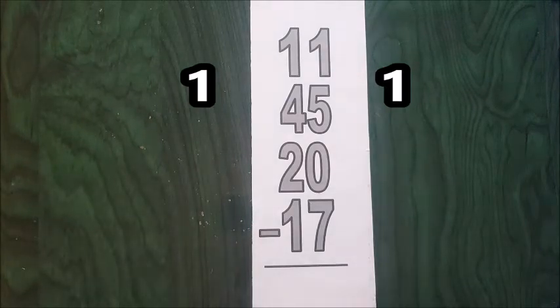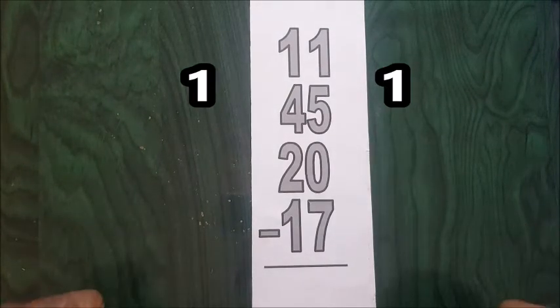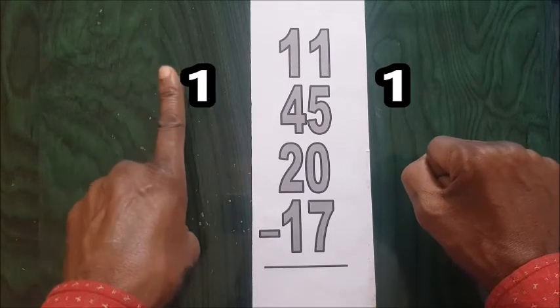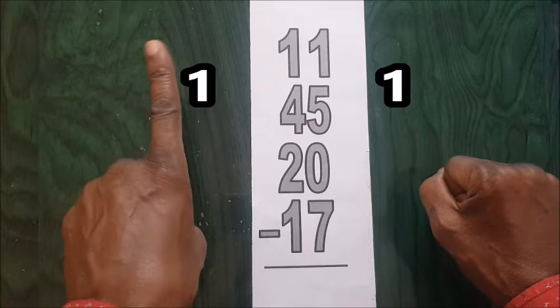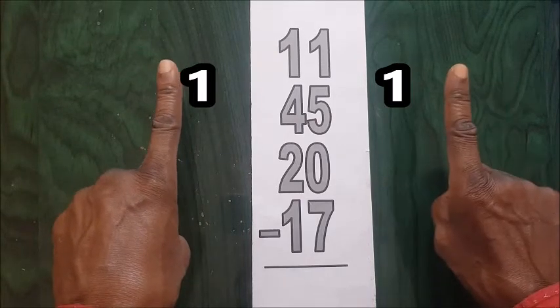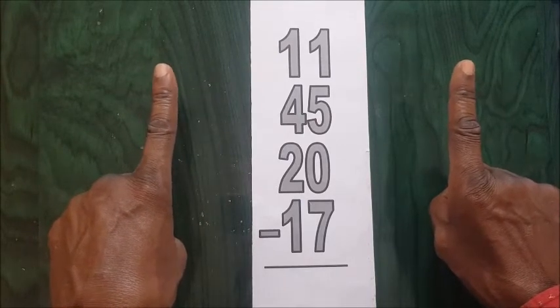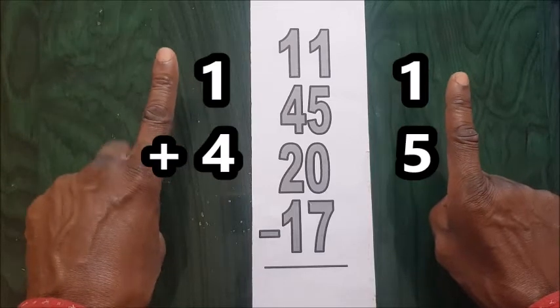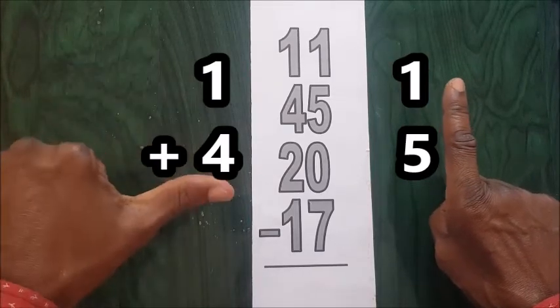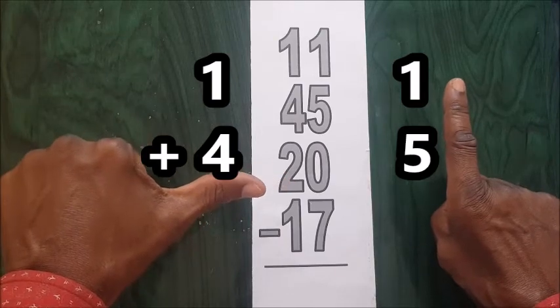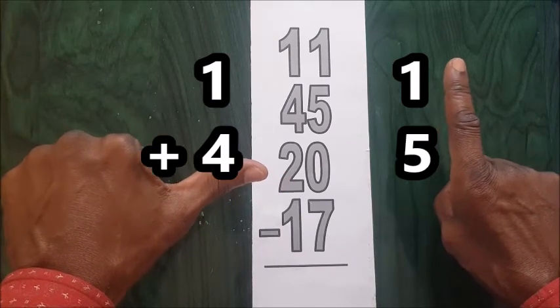Now we're going to start. We have eleven. We treat the larger number first, so ten, one, that means ten. Plus eleven and forty-five: ten, twenty, thirty, forty. I'm left with five. Since the thumb is five, I'll shoot it up, forty-five.